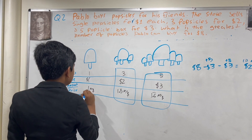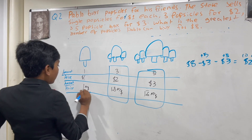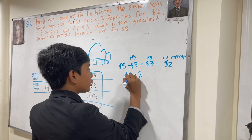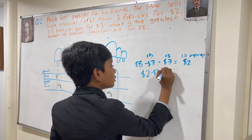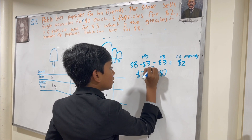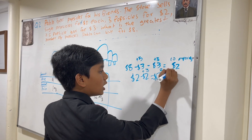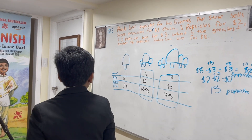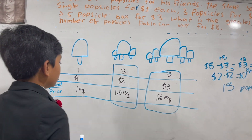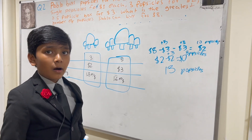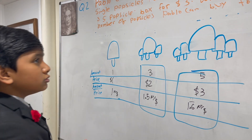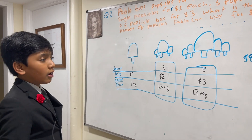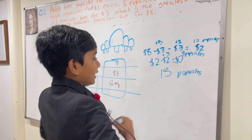Because the single popsicle has the worst popsicle-per-dollar ratio. So subtracting two dollars gives us zero dollars — broke — and three more popsicles. That means we have ten plus three is thirteen popsicles. On the alternative, if instead of buying the three-dollar deal he had bought two one-dollar popsicles, he would have only gotten twelve. If he bought exclusively one-dollar popsicles, he would have gotten eight. And if he bought exclusively the two-dollar packs, he would have also gotten twelve. So thirteen is the biggest he can get.